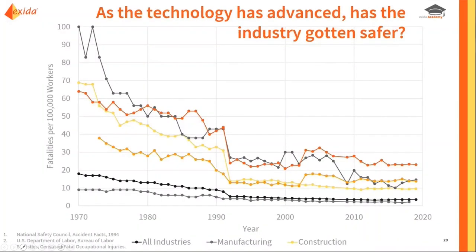But the truth is, these data sets are based on the U.S. I looked at a couple of other studies, and I think they're relatively representative. I know there will be differences between regions. But ultimately, what we've seen is that as technology has advanced, we've seen improvements from where things started in the 1970s.